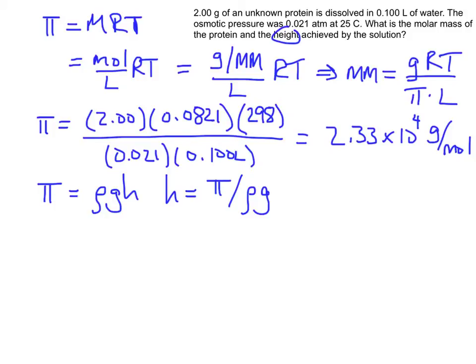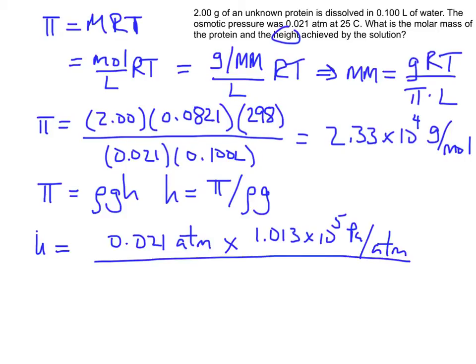So my height here is going to be equal to the osmotic pressure, which is 0.021, and that's an atm. To convert that to pascal, I have to multiply that by 1.013 times 10 to the fifth pascals per atm. So that will take care of converting my pressure into pascals. Now, I'm going to divide that by the density.